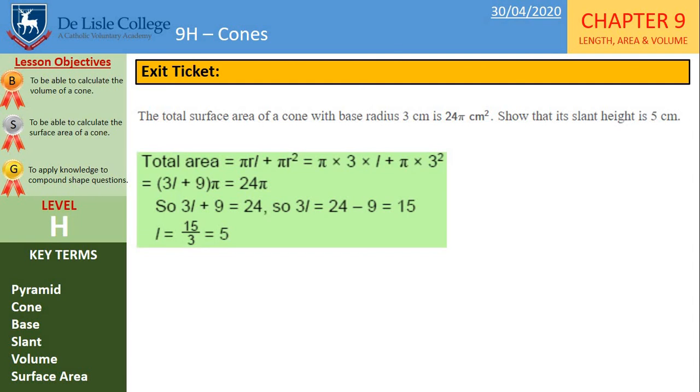Okay, so here's the working. We've got the total surface area. We know is pi r L plus pi r squared. So if we substitute in what we are given, pi times 3 times L plus pi times 3 squared, we know that is given as 24 pi. So we know what the total surface area is. If we simplify that first part, we get 3L plus 9 in brackets multiplied by pi. So that means we can simplify this. We've got 3L plus 9 is 24.